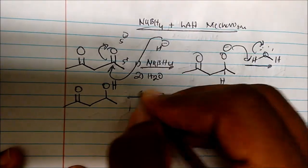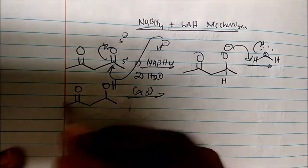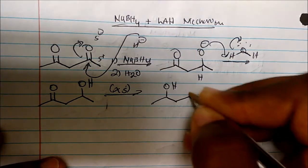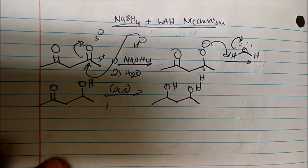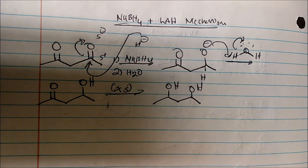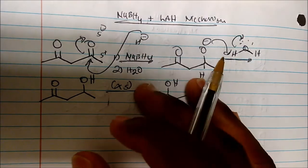This reaction happens twice. It reduces both carbonyls and we get the observed product. That's the general mechanism for the reduction of a ketone to an alcohol from sodium borohydride. The mechanism is also plausible for aldehydes - it's the same thing.